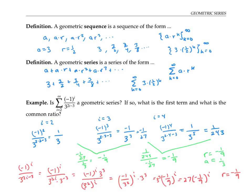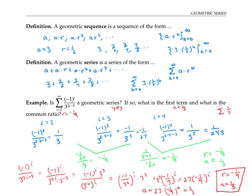Now, you might think the first term should be 27, but remember that i doesn't start at zero — it starts at two. So the first term is what I get when I plug in the first value of i. That's 27 times negative one ninth squared, which works out to one third, as before. So we have a geometric series with first term one third and common ratio negative one ninth. We could rewrite it in more standard form as the sum of one third times negative one ninth to the k, where k ranges from zero to infinity, since k equals zero corresponds to i equals two — this is a re-indexing.